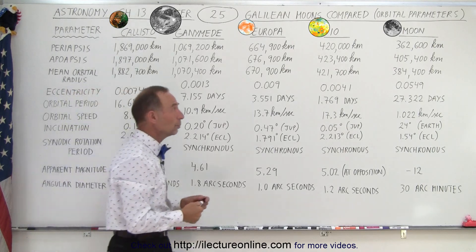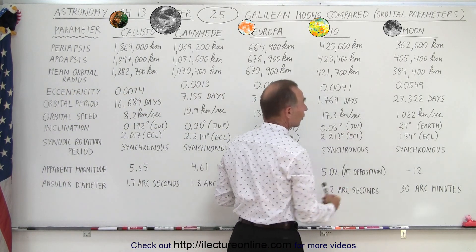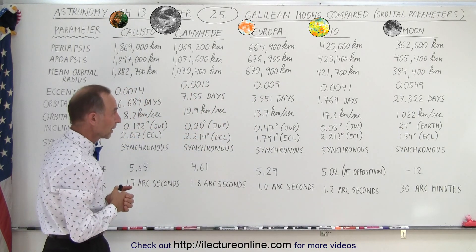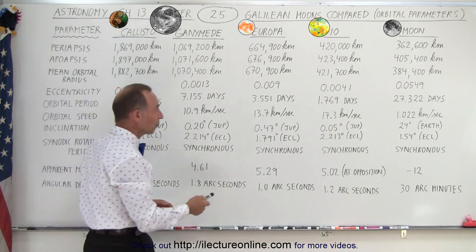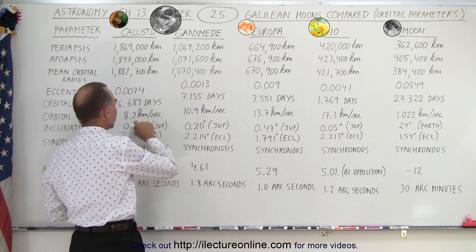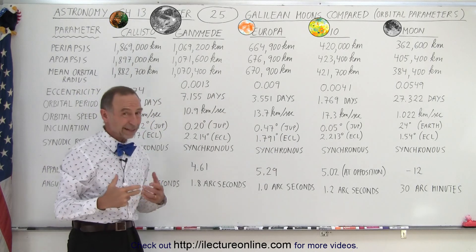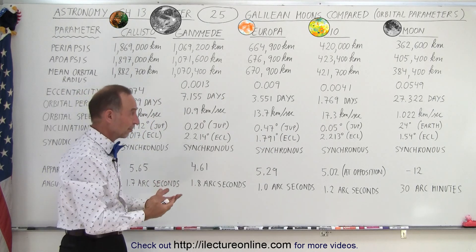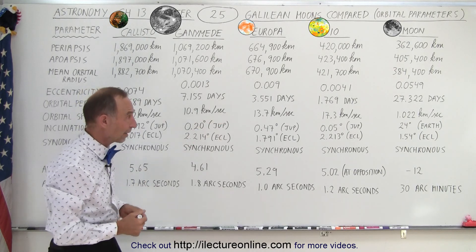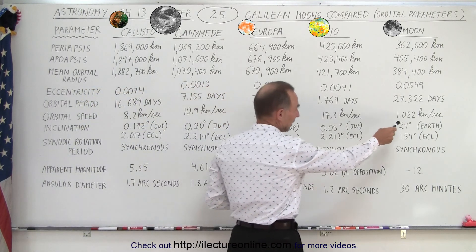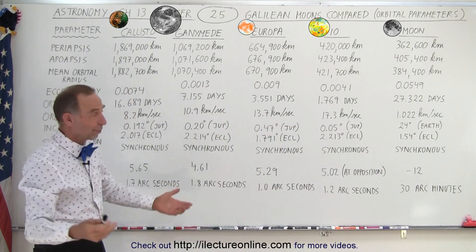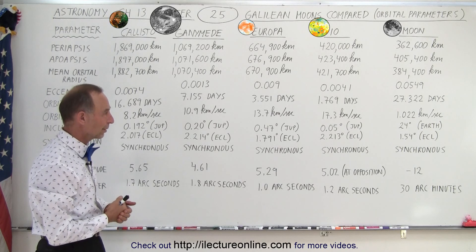Compared to our own moon, which takes just over 27 days for one trip around the Earth, the orbital speeds are quite different. The Galilean moons move at 17.3 km/s for Io, 13.7 for Europa, 10.9 for Ganymede, and 8.2 for Callisto. That's somewhat comparable to Earth's orbital speed around the Sun of about 30 km/s. By contrast, our moon is just moseying around at about 1 km/s, which is why it takes almost a month to orbit Earth.